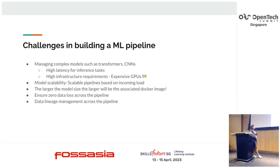When we say high latency, we mean more than a couple of seconds. In an API-type framework, having latency higher than a second is a serious problem, and you can't take such a model to production.